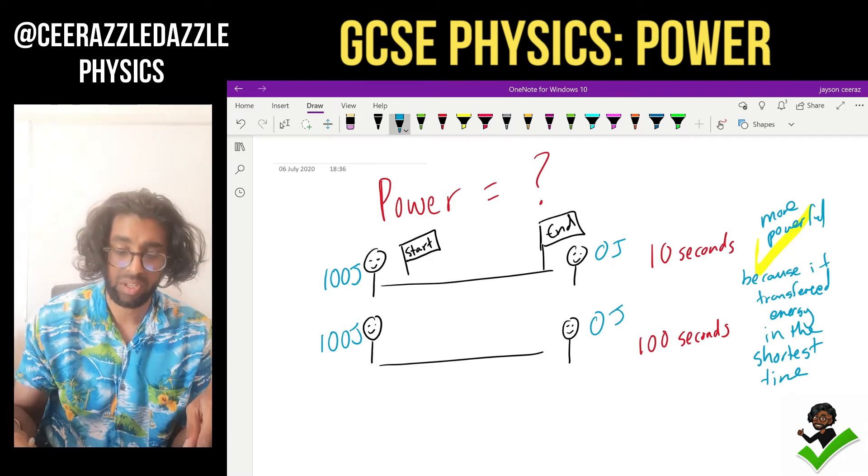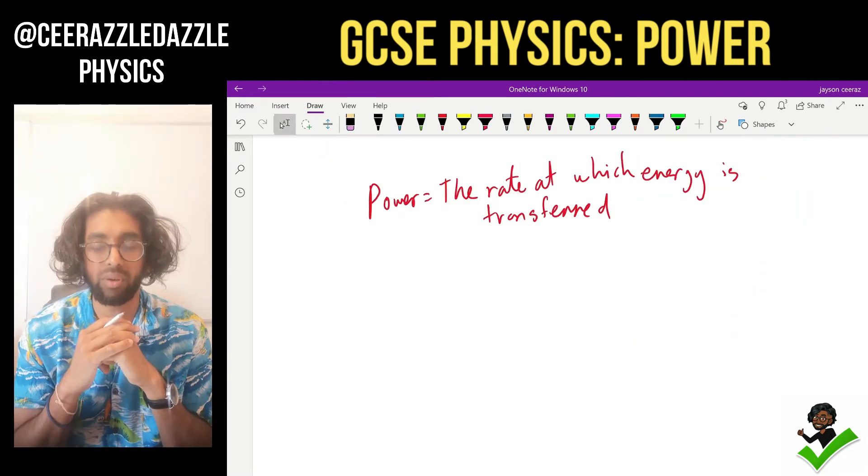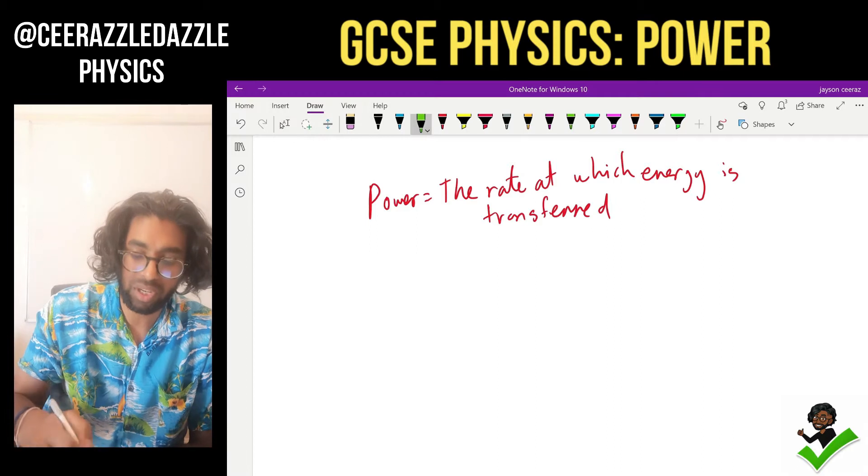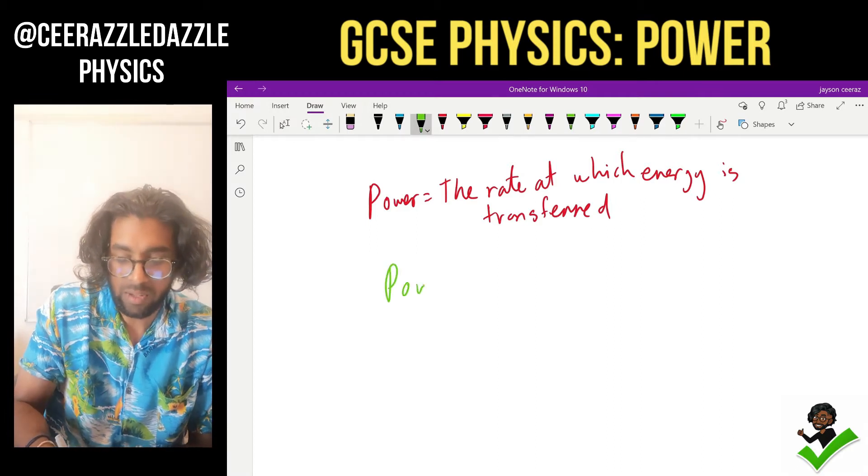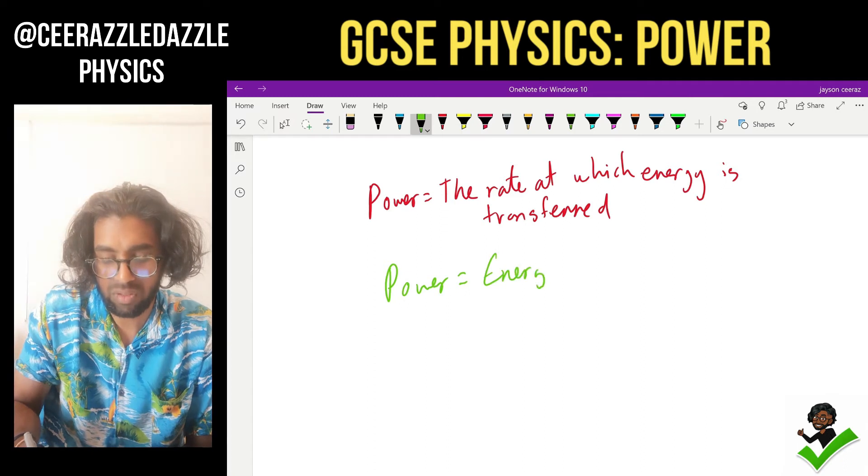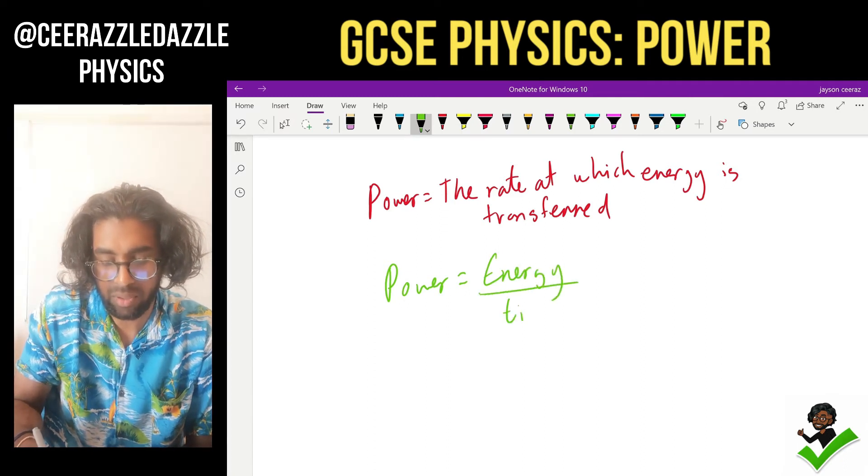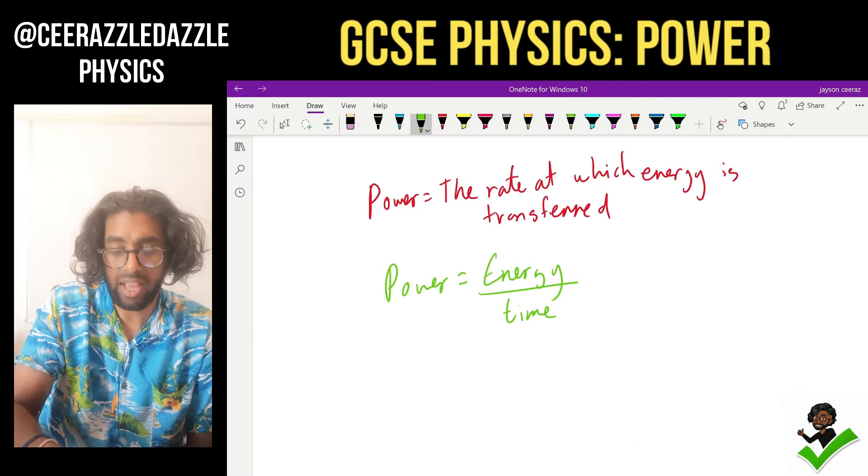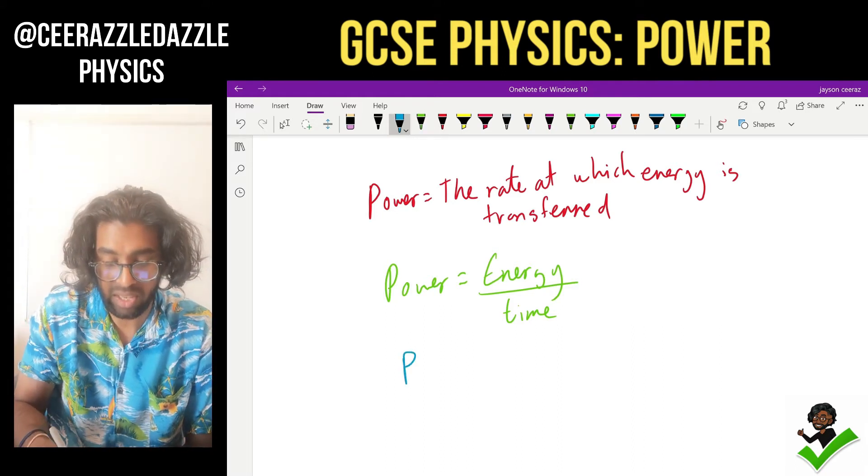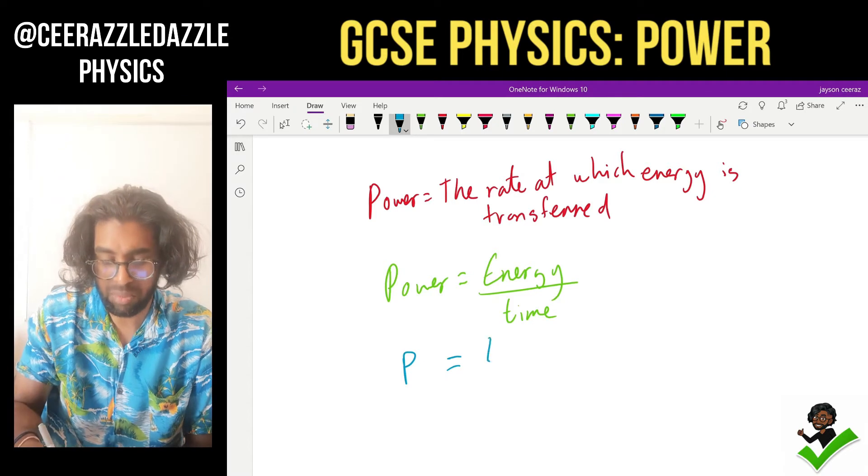Let's scroll down for the definition. So power is equal to the rate at which energy is transferred. And in terms of a formula we can write down power is equal to energy divided by the time. And in terms of symbols power can be denoted by P. Energy is going to be E divided by time which is T.